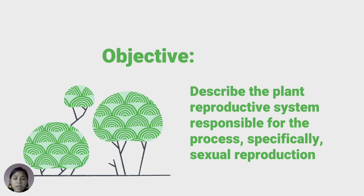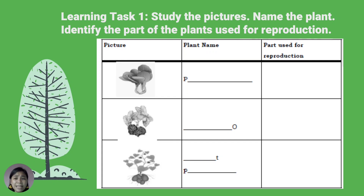This lesson is intended for you to describe the plant reproductive system responsible for the process, specifically sexual reproduction. The different activities you will encounter in this lesson will lead you to understand how different parts of plants function in producing their own kind. Do you know of any plants in your community that grow a new young plant through their leaves or stock?